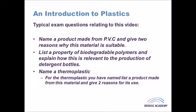Flame retardants can be added to stop the plastic igniting easily — helpful for cushions or upholstery. Anti-static agents can be included to stop the buildup of static electricity. Plasticizers can be added to improve the material's ability to flow during molding, reduce the temperature needed for molding, and make the product less brittle. Stabilizers can stop the product being degraded by ultraviolet light.